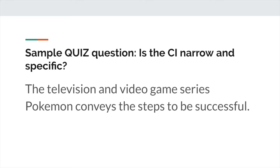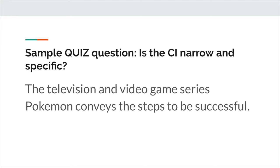So even if you don't have that 'what' word in there that cues you to immediately know that it's not narrow and specific, you can still write CIs that are vague. Let's take a look at a final CI. Game of Thrones conveys that an obsession with attaining power often causes one to abandon their morals. Is this narrow and specific? Yes. This is a clear causal claim. It is beyond the text and is very clear about what it's arguing — it doesn't leave anything ambiguous or vague. You understand exactly what causes one to abandon their morals. The vague version would be 'Game of Thrones conveys what causes one to abandon their morals,' which doesn't make it clear. But this CI does.